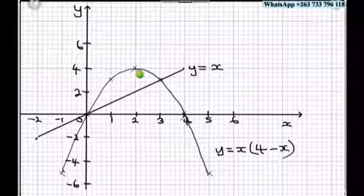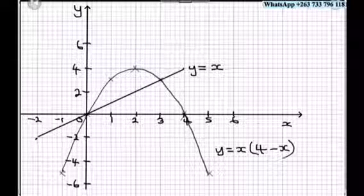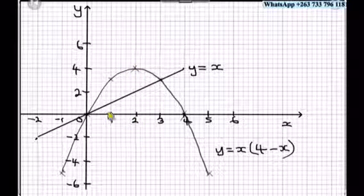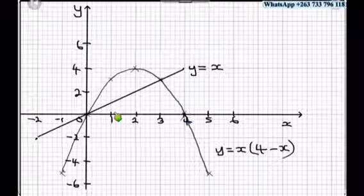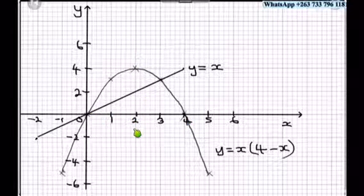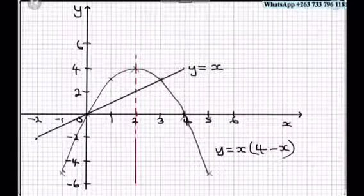Therefore, our line of symmetry passes through the maximum point. Or you can divide here with 4 units. Therefore, it's 4 divided by 2. So this will be our line of symmetry. Let's draw our line of symmetry.